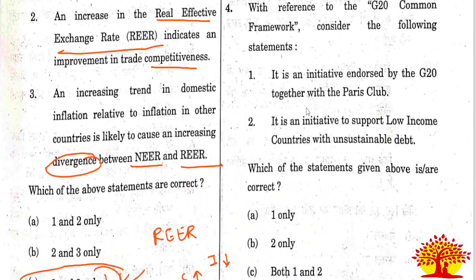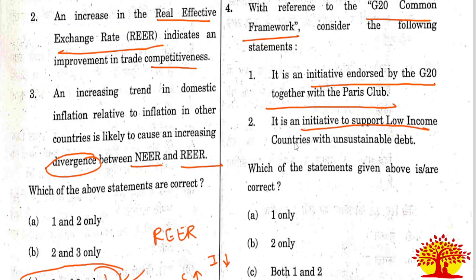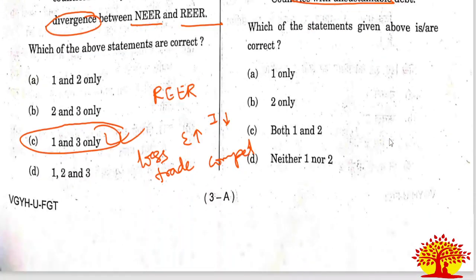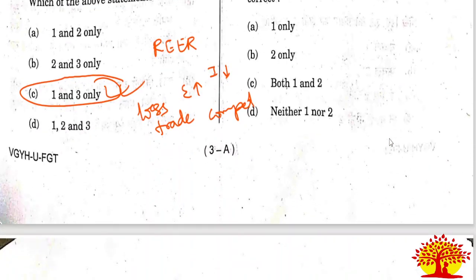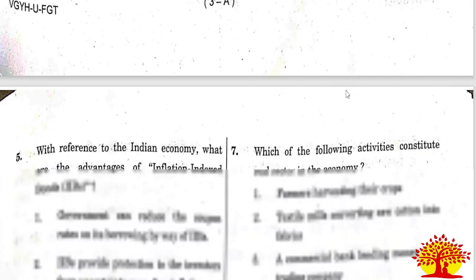Fourth question on the G20 Common Framework: Statement 1 - it is an initiative endorsed by G20 together with the Paris Club. Statement 2 - it is an initiative to support low-income countries with unsustainable debt. Both statements 1 and 2 are correct. Option C is the right answer.